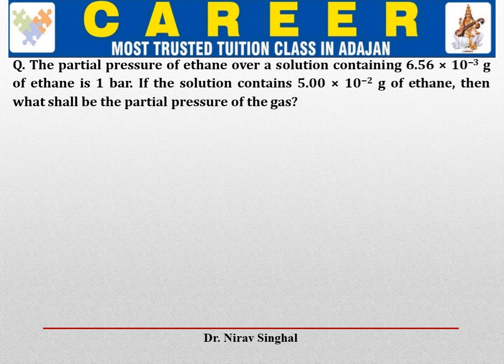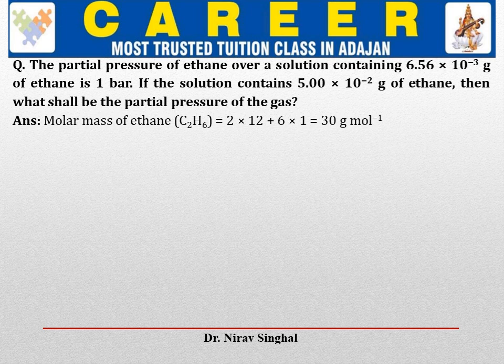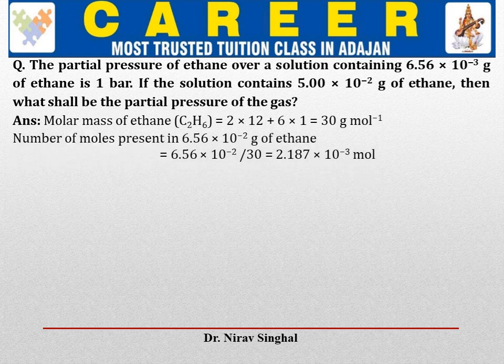The partial pressure of ethane over the solution containing 6.56 × 10⁻³ grams of ethane is 1 bar. If the same solution contains 5 × 10⁻² grams of ethane, what will be the partial pressure of the gas? First calculate the molar mass of ethane, which is 30 g/mol. Given mass of ethane is 6.56 × 10⁻² grams. So moles = 6.56 × 10⁻² / 30 = 2.187 × 10⁻³ moles of ethane.